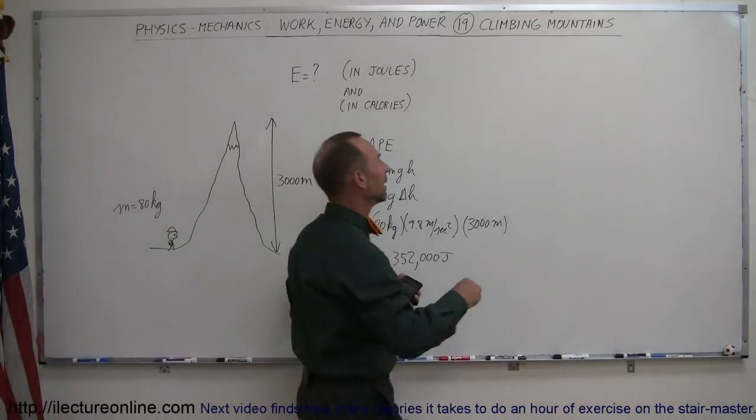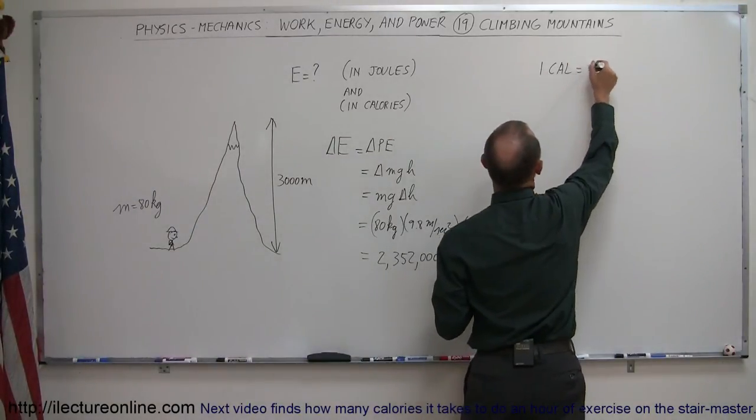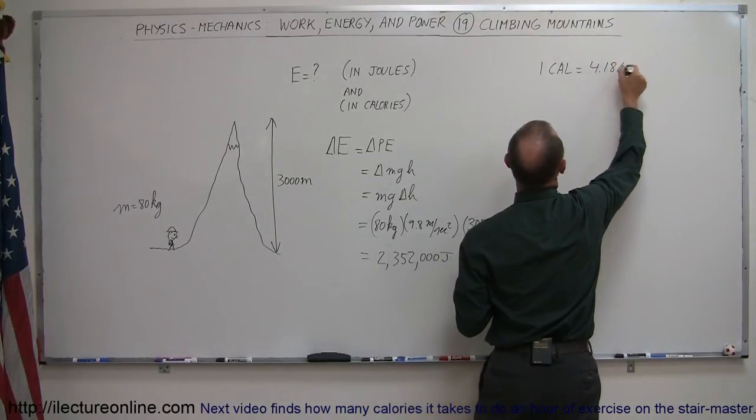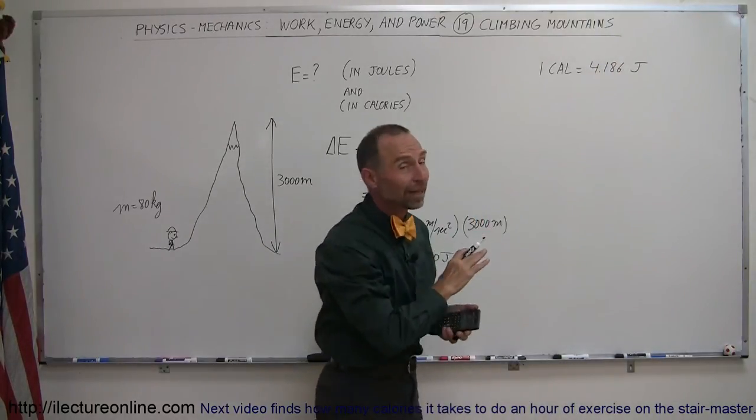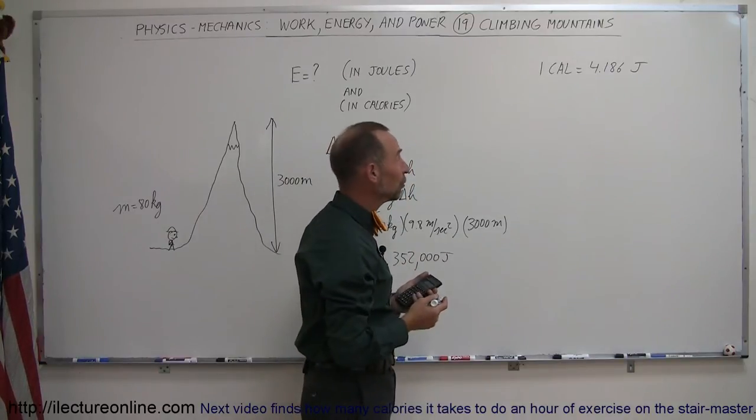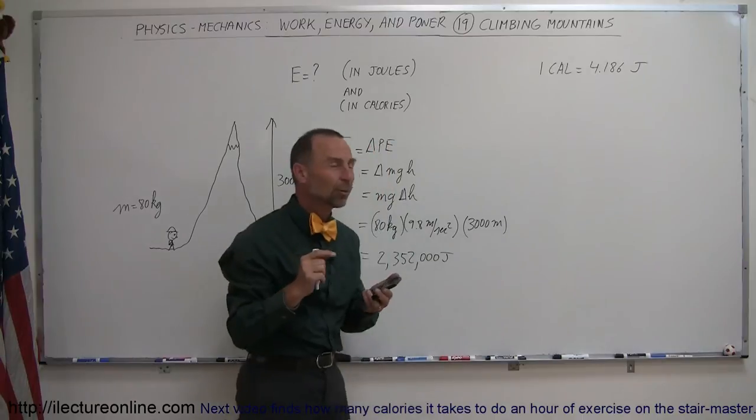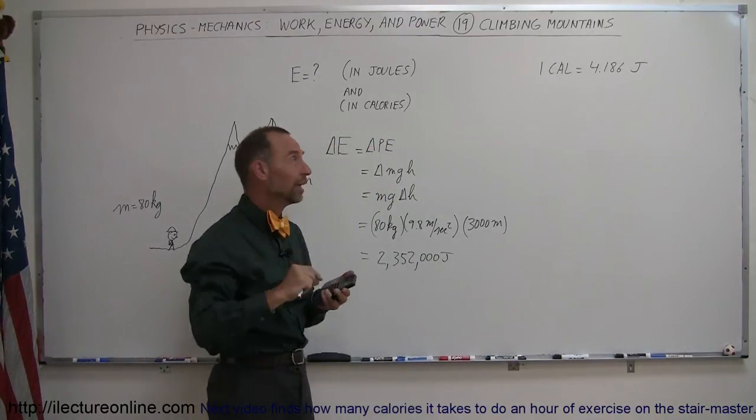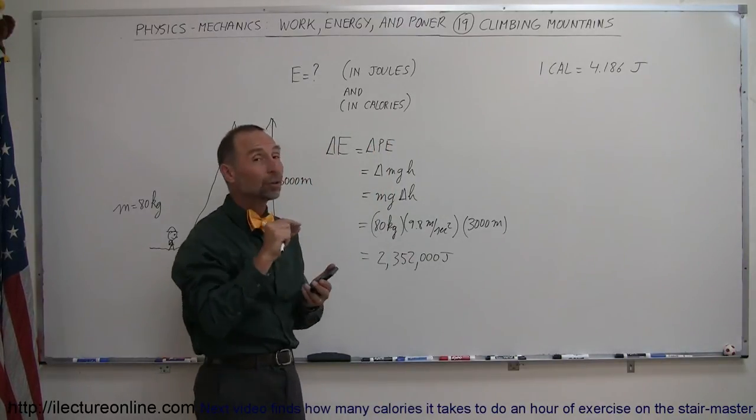Well, it turns out that 1 calorie is equal to 4.186 joules. But don't confuse those kind of calories with the calories that we associate with food. That type of calorie is the energy required to take 1 gram of water and raise its temperature to 1 degree centigrade.